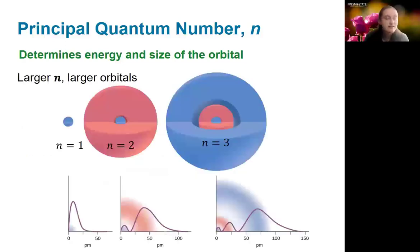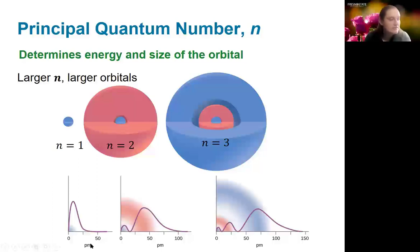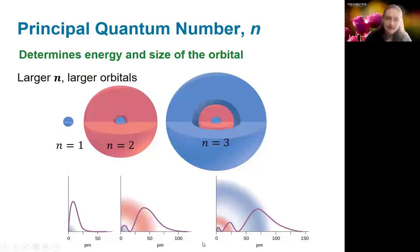The size of the orbital is directly correlated with the principal quantum number — as n gets bigger, the orbital gets bigger. We can see this in the radial probability distribution functions: for n equals 1, the maximum is less than 25 picometers; for n equals 2, it's between 25 and 50 picometers; and for n equals 3, the maximum is above 50 picometers.